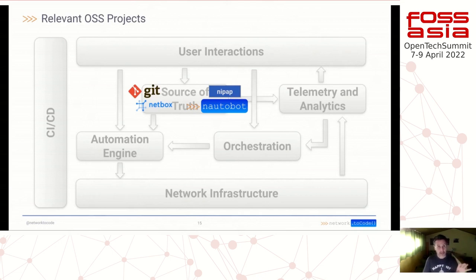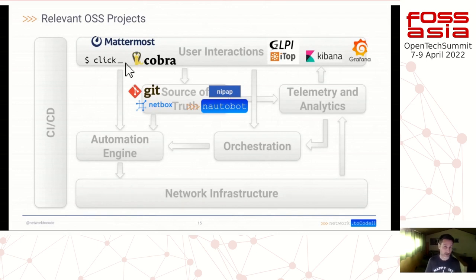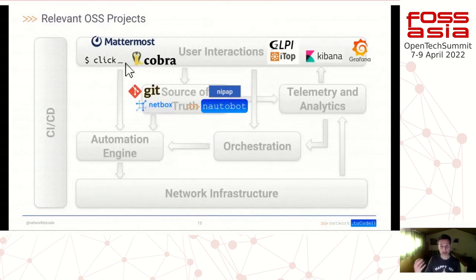When we define this information in the source of truth, what comes next? Someone has to interact with it. We can offer multiple open source solutions here. We have chat applications like Mattermost. We can build CLI applications in Python with Click, in Go with Cobra, and many others. We also have complete IT service management solutions like GLPI or iTop. And to visualize, we have Kibana or Grafana, which can help us get data from the telemetry storage.